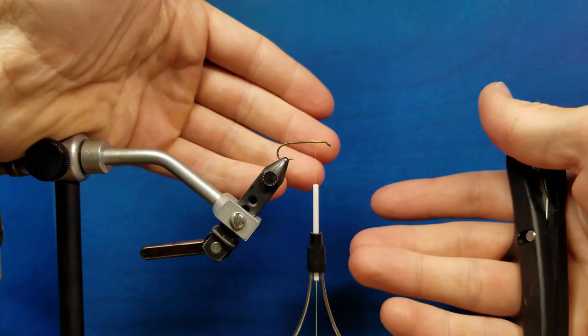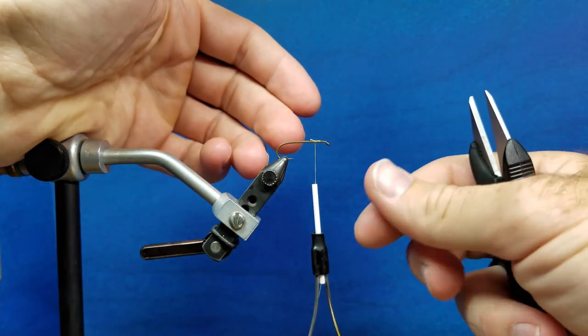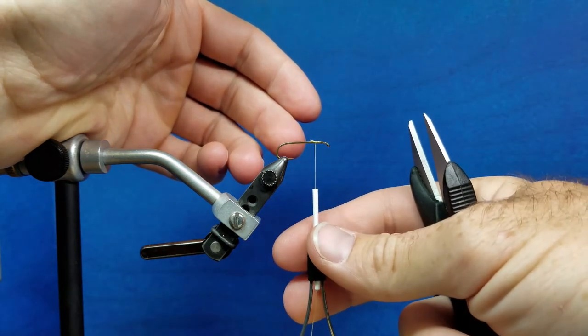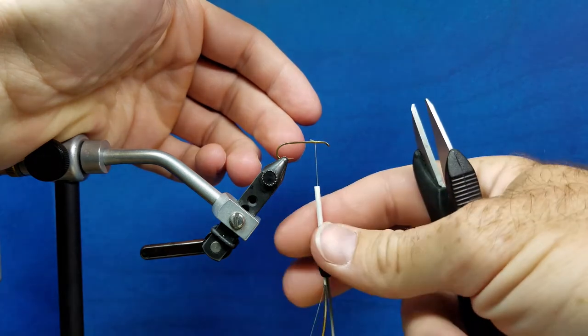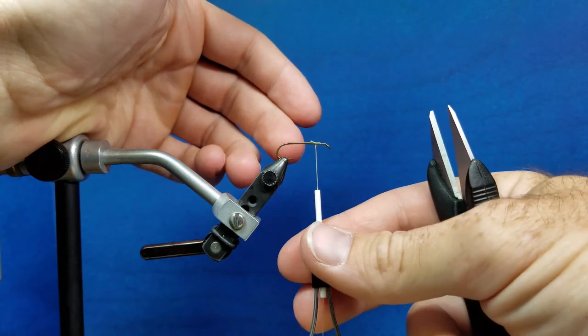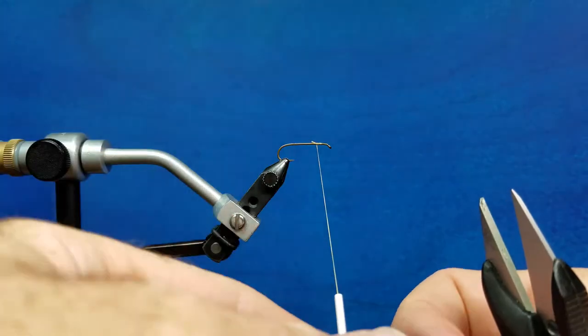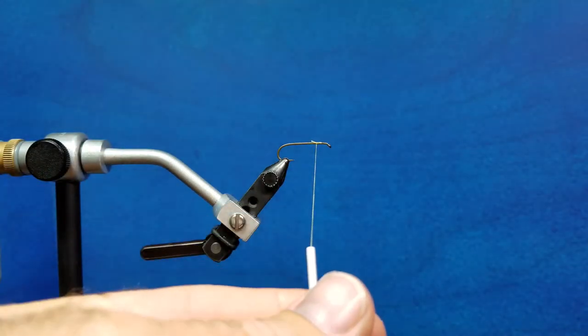I'm a right handed tyer and so typically I start off with the bobbin in my right hand. When tying the half hitch, at least when learning it, the easiest way is to actually start off with that bobbin in your left hand. So I'm going to pull out a little bit of extra thread and the bobbin is actually going to start in my left hand.